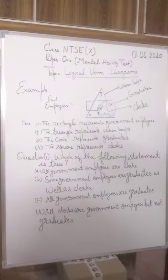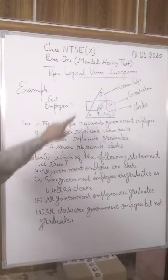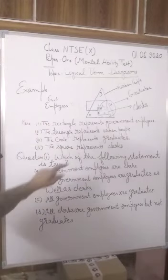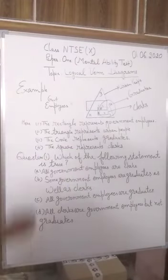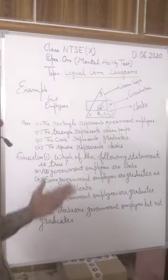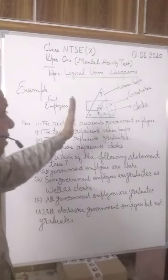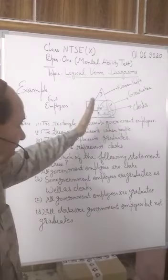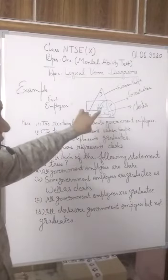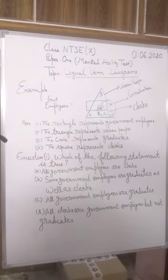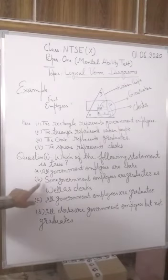If we see carefully, government employees is represented by rectangle, graduates are represented by circle, and clerks are represented by square. We can see that some part of the rectangle lies within both the circle and the square, which is clearly visible from the diagram. Therefore, the correct option is B, and it is our right answer.